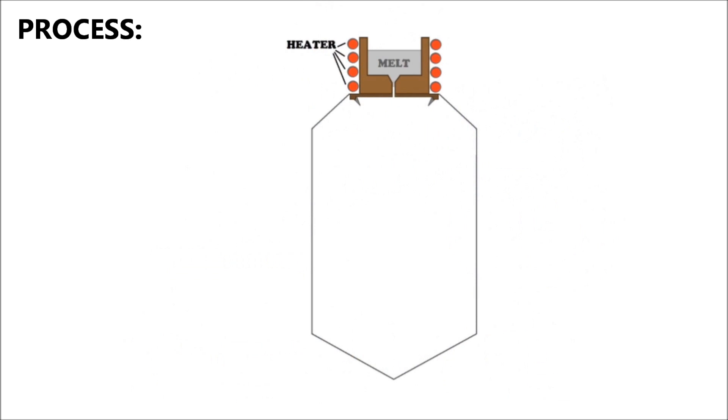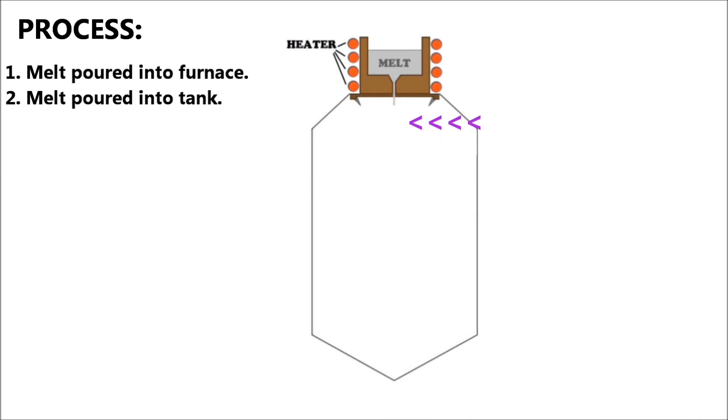The atomization process begins by pouring the melt into a furnace where it is heated and kept in liquid form. Next the melt is poured out through a hole into the atomization tank. Here several high pressure jets will spray out the liquid and disintegrate the melt.